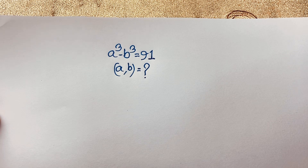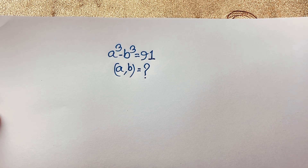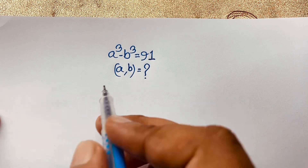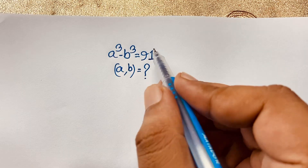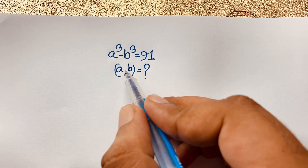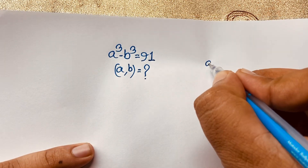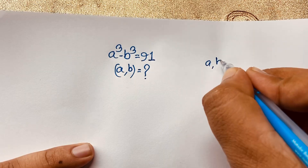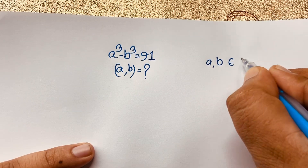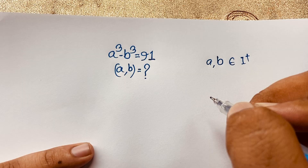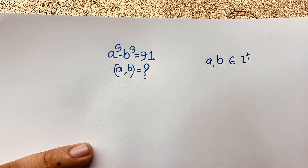Hello everyone, welcome to Russell's classroom. Today we have solved a nice Math Olympiad question: a³ minus b³ equals 91, where a and b are positive integers. We'll find out what the values of a and b are.